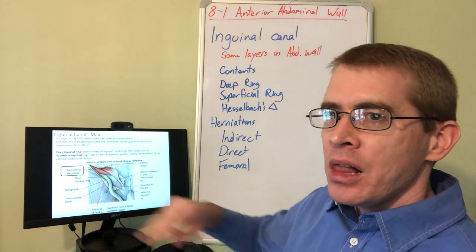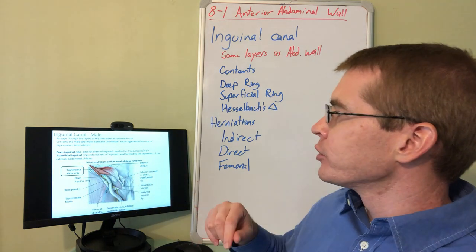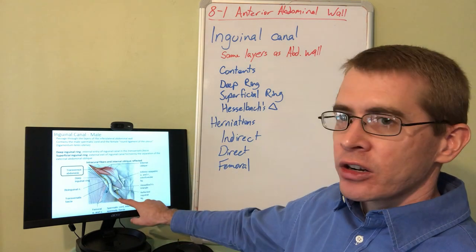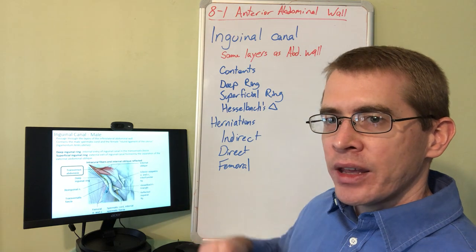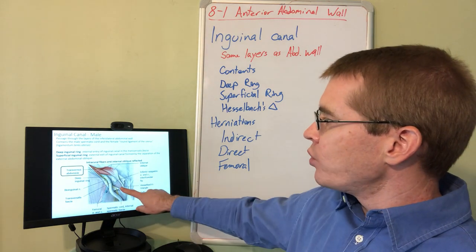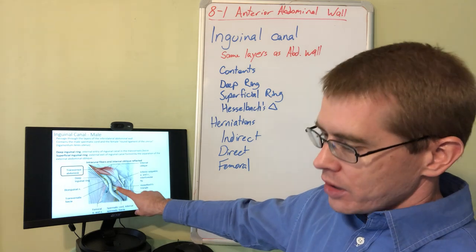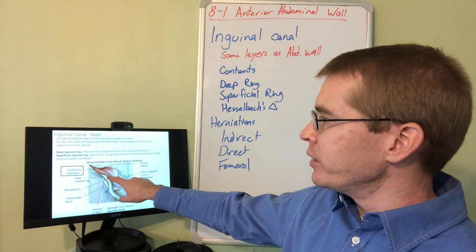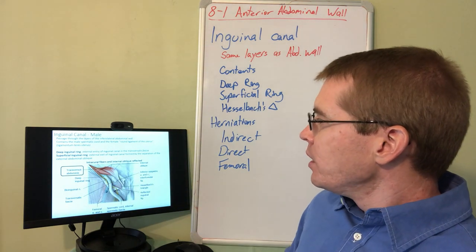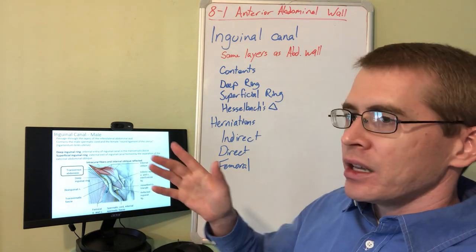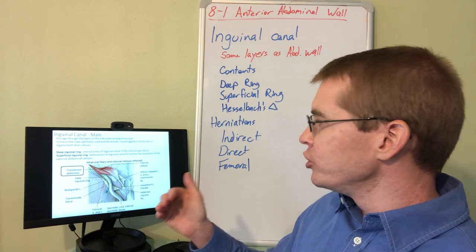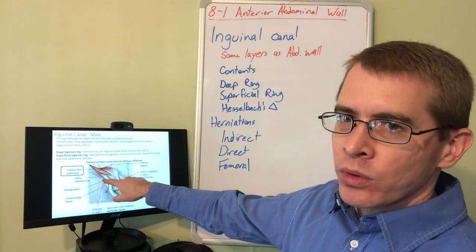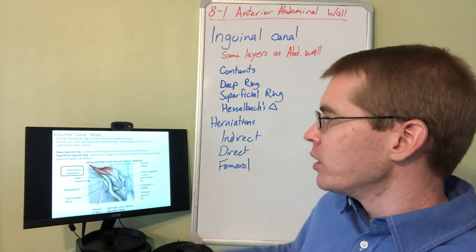If we open up the inguinal canal by cutting through the external and internal abdominal oblique muscles, we can see the spermatic cord encased by the external spermatic fascia. We've opened up the superficial inguinal ring, and we can now see the location of the deep inguinal ring, indicated by the teal circle. The inguinal canal has an anterior and a posterior wall; the posterior wall is composed of the transversalis fascia, through which the deep inguinal ring forms and the spermatic cord travels.